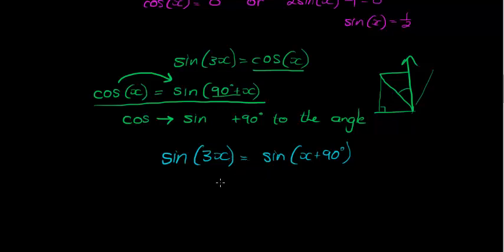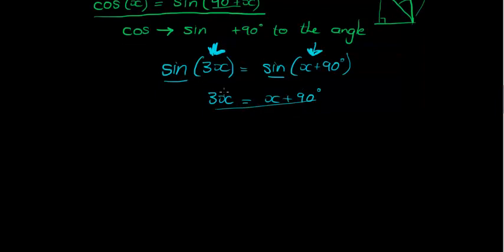But now you are tempted to say but 3x is equal to x plus 90 because I mean if sine of something is equal to sine of something else then it must be true that this something is equal to that something. I mean that the two sides are equal the two functions are equal. Doesn't it mean that the interiors are equal? And that unfortunately is not true.